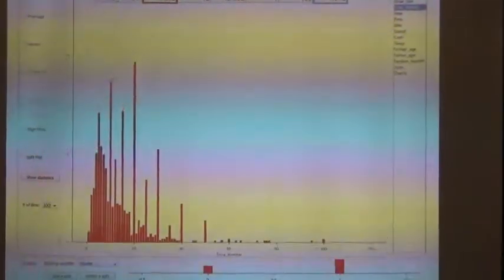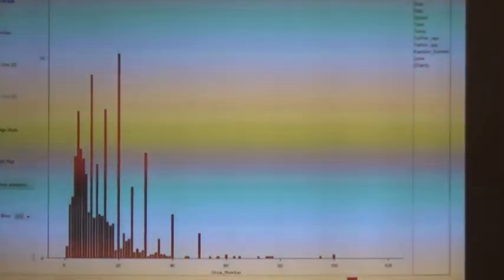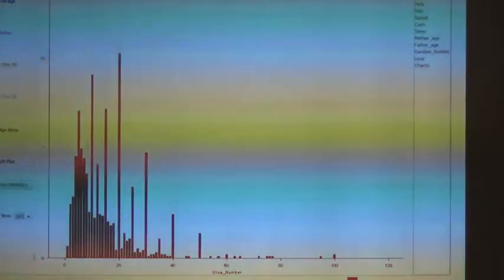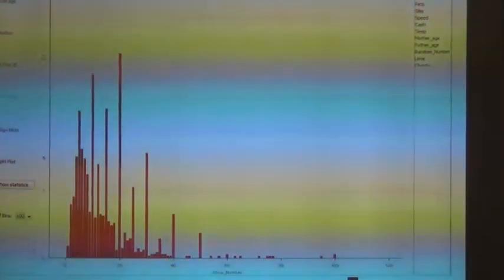So people are doing what? Rounding. Yeah, rounding. Estimating. They're not going to a closet. Whereas that doesn't happen with mother's ages and father's ages because they know exactly.